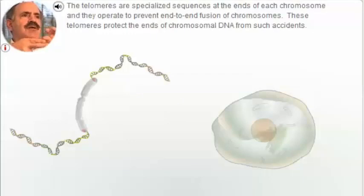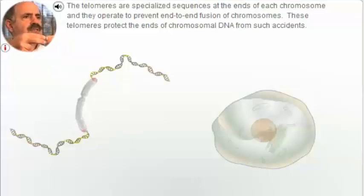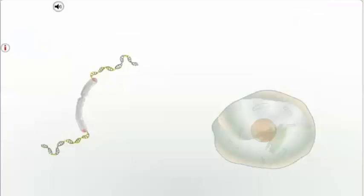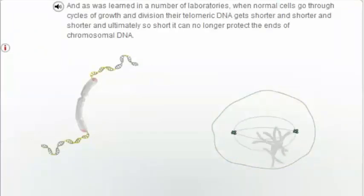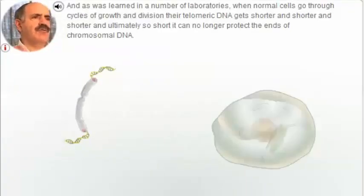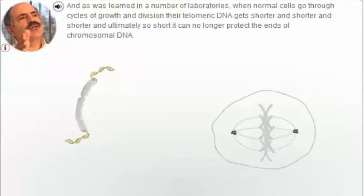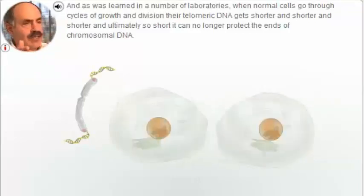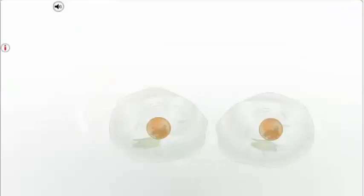The telomeres are specialized sequences at the ends of each chromosome, and they operate to prevent end-to-end fusion of chromosomes, protecting the ends of chromosomal DNA from such accidents. When normal cells go through cycles of growth and division, their telomeric DNA gets shorter and shorter, and ultimately so short that it can no longer protect the ends of chromosomal DNA. Telomeres start fusing, the chromosomes start fusing in those cells, and those cells die.